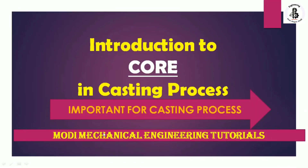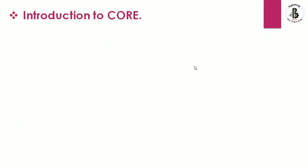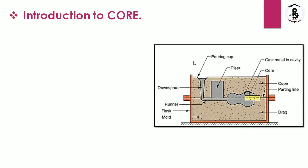Welcome to my YouTube channel Modi Mechanical Engineering Tutorials. In this video I would like to explain about the introduction to core in a casting process. Let us start with the introduction. You can see the different terminologies used in a casting process. The lower portion is known as a drag, on top of the drag is the cope, and cope and drag fixed together make a mold flask. Into the mold, sand is filled to make a cavity.